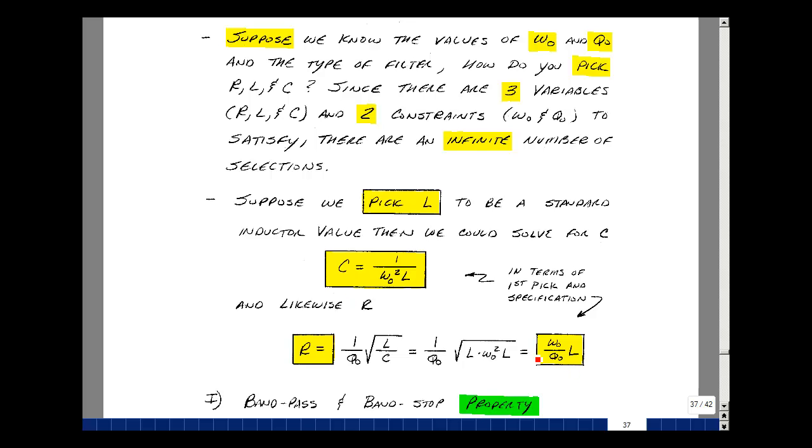So if I were to pick a value of L that gave me an impractical resistor or capacitor, I can go back and pick L again, such that the values of C and R are practical. And these are some of the properties of a band stop filter and how to pick the components in any of our second-order filters.